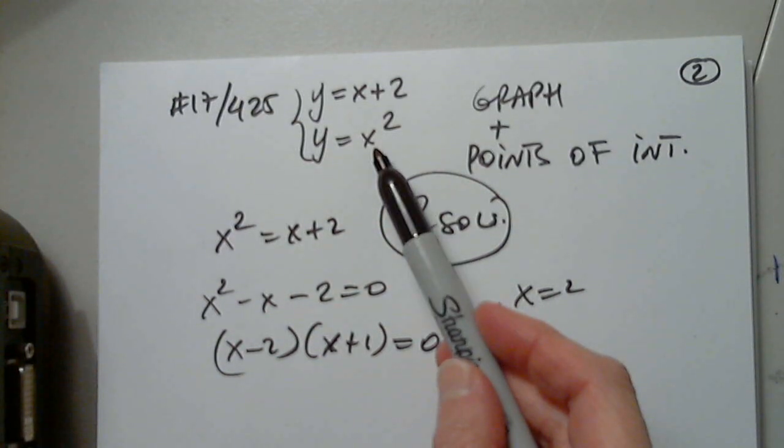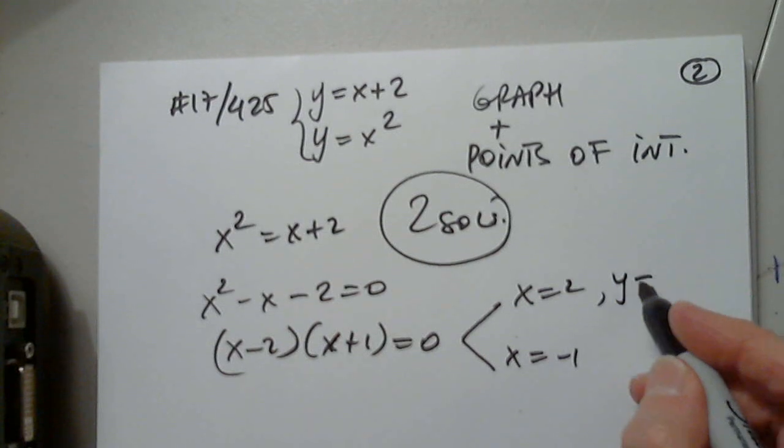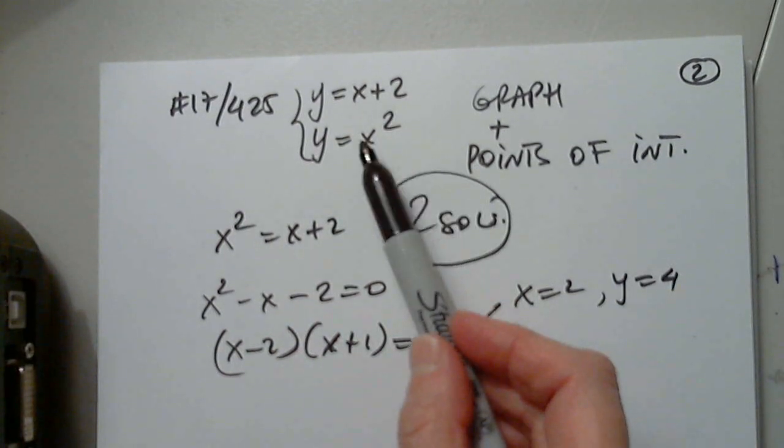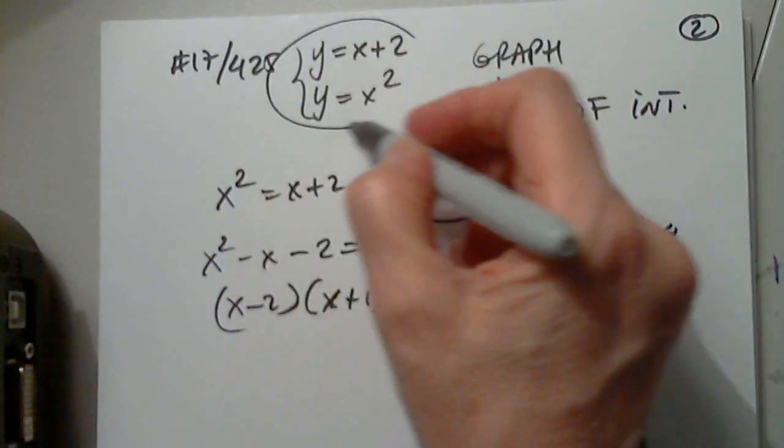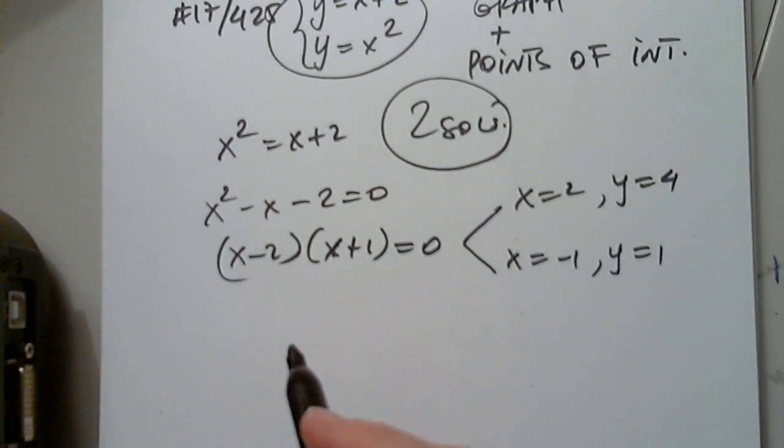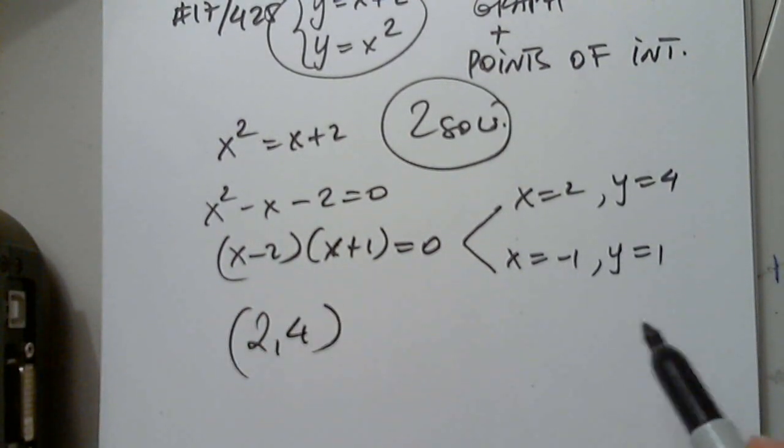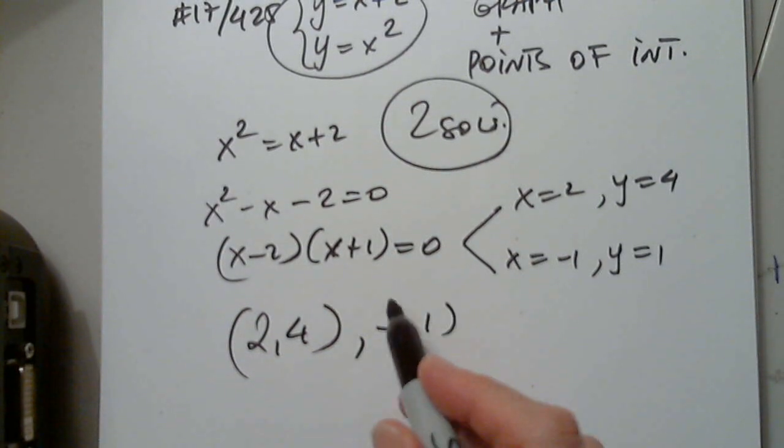So, x equals 2 and x equals negative 1. When x equals 2, y equals 4. When x equals negative 1, y equals 1. So, when I graph these two functions, they better intersect at 2 comma 4 and negative 1 comma 1.